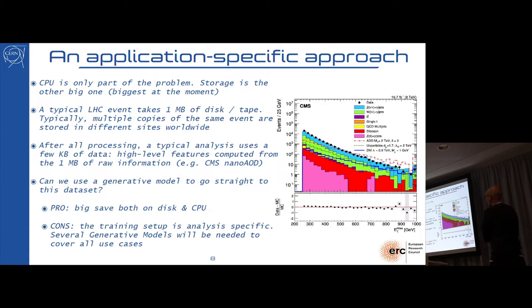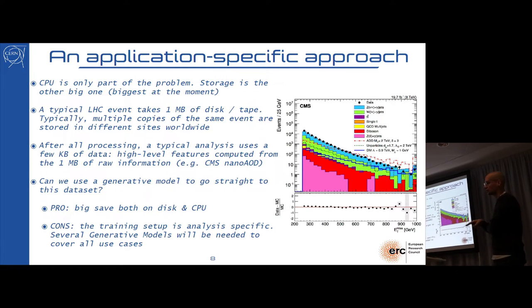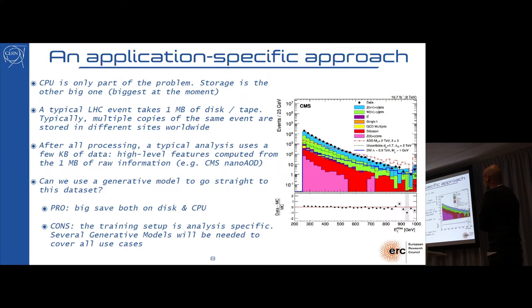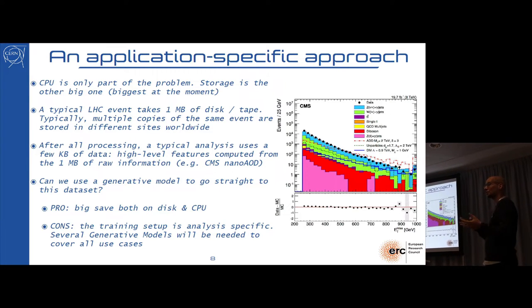If you now scale this thing up, the amount of storage that you will need might be too much for you to handle at flat budget. On the other hand, the experience of these first ten years tell us that we don't really need one megabyte of data to analyze. What we actually do is take this megabyte of data, which is centrally analyzed once, and then you write order of hundreds of expert features out of these into some compact data format that takes a few kilobytes, what CMS calls the nano AODs.